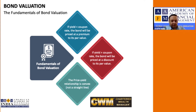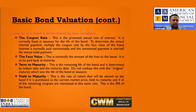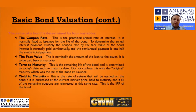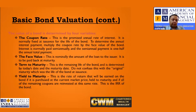Let's look at the various terms associated with a bond, starting with the coupon rate. The coupon rate is the promised annual rate of interest from the bond. It is fixed at the time of issuance for the life of the bond. To determine the annual interest payment, multiply the coupon rate by the face value of the bond. Interest is normally paid semi-annually, and the semi-annual payment is one half of the annual promised rate of payment.